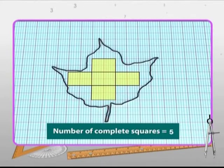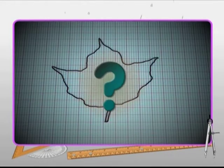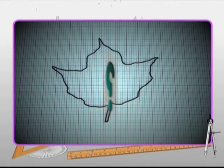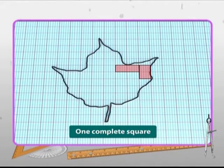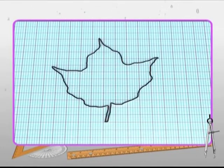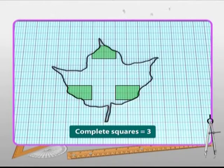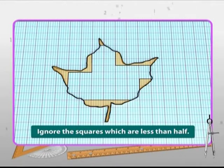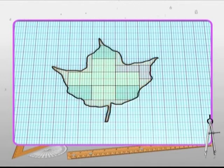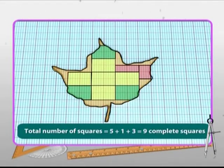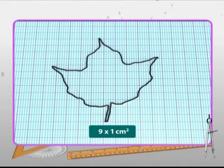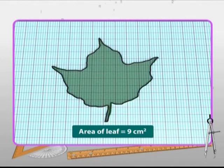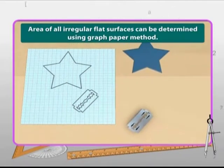After counting the complete squares, the question that arises is, how will you count the incomplete squares covered under the outline? Count two half squares as one complete square. Consider more than half squares as complete squares, whereas ignore the squares which are less than half. Now add the squares to get the total number of squares and multiply the result by the area of one square, that is by one centimeter square to obtain the area of the leaf. Area of all other irregular flat surfaces can be determined using the same approach.